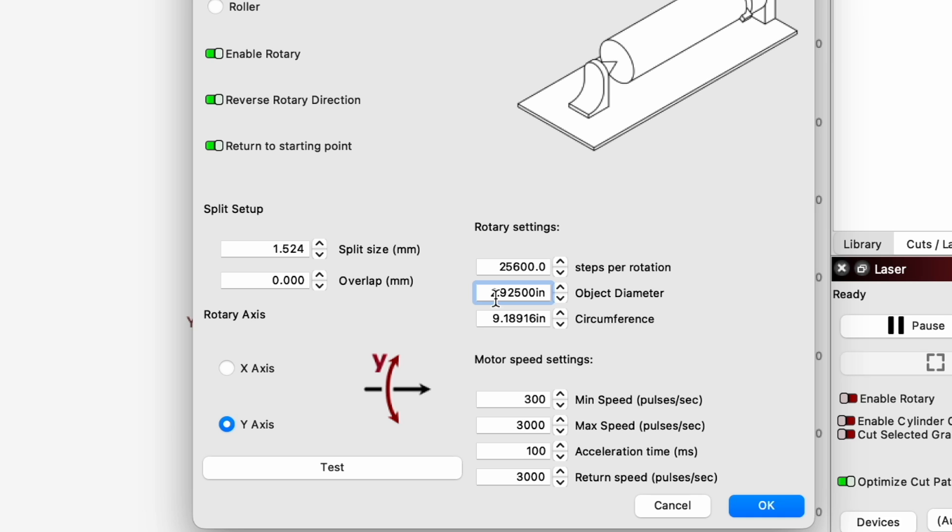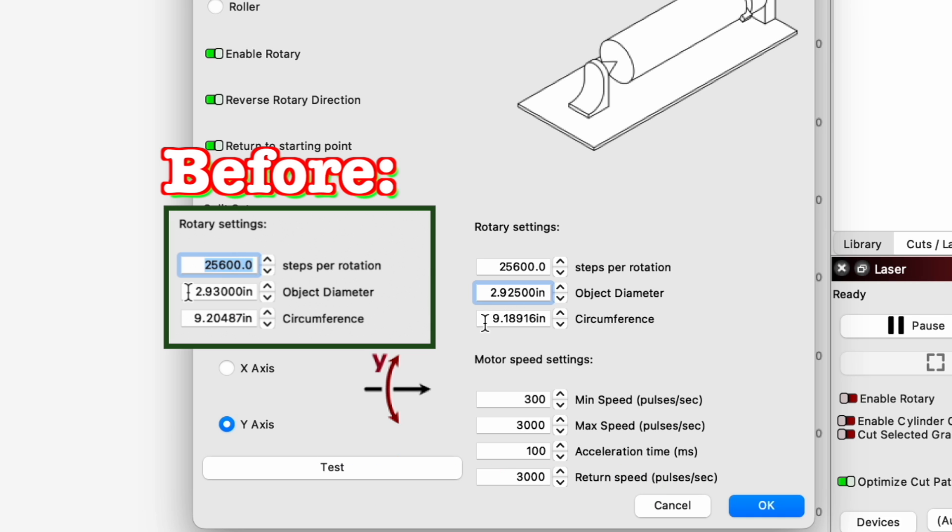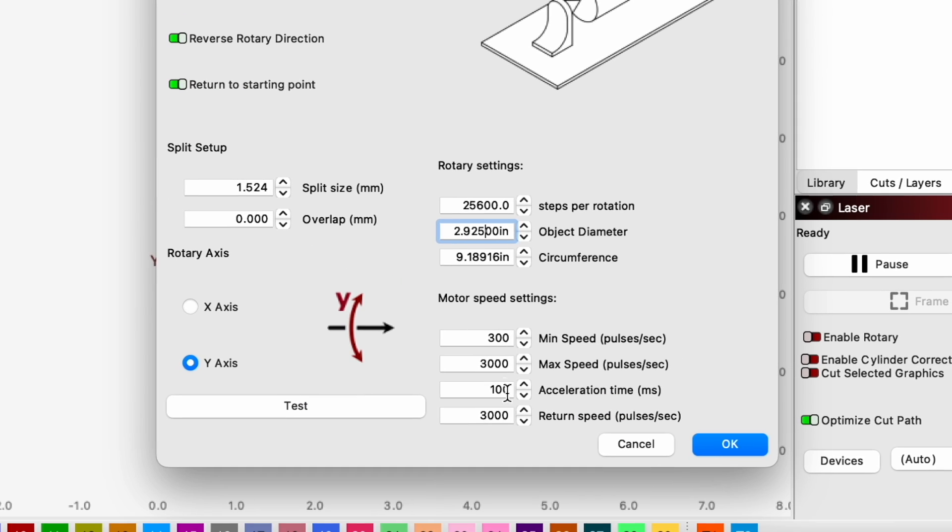And you can see when you adjust the diameter, it automatically adjusts the circumference. For the motor speed settings, we're going to leave this pretty much default. No real reason to change that right now. And we're going to call that good for now.